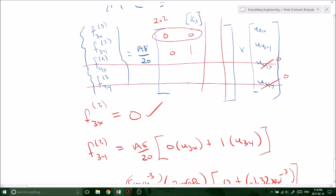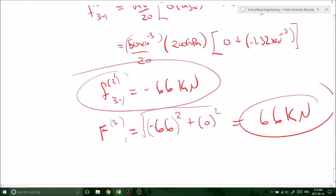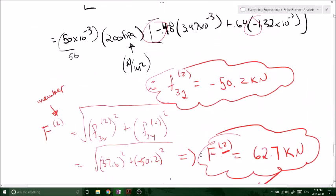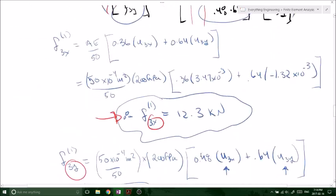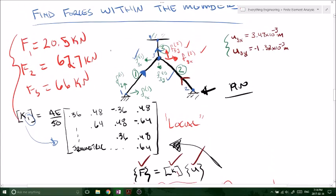So we had F3X was equal to 0. F3Y was minus 66 kilonewtons. Take the magnitude. And we still got 66 kilonewtons in the third member. So that is it, everybody. We have now solved the 3 member problem in 2 dimensions. We found the forces. And then we found, or sorry, we found the displacements at the third node. Because it was the only free node that was able to move. So we found the displacements at the third node. And then also the forces within each member.